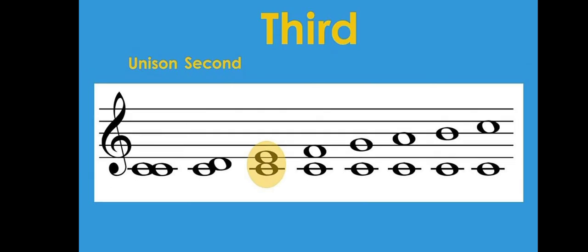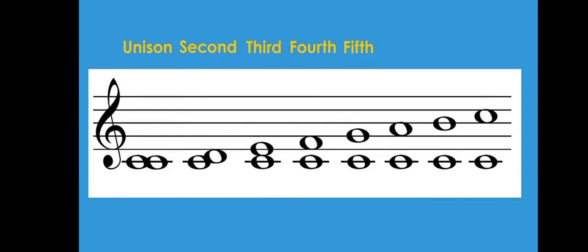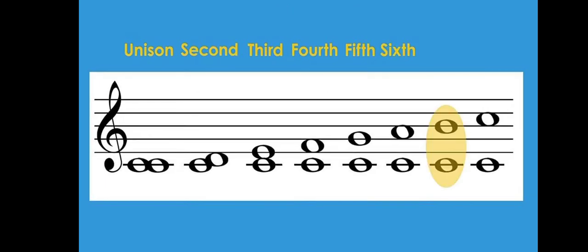The next one is a fourth, then a fifth, then a sixth. For the seventh, we have the first note at line C and the next one at line B. From C to B: C is 1, D is 2, E is 3, F is 4, G is 5, A is 6, and B is 7. So this one is a seventh.